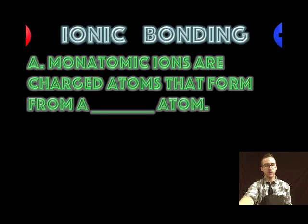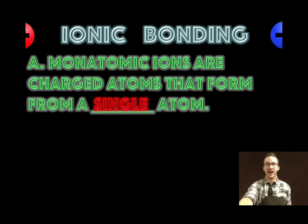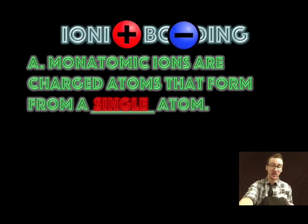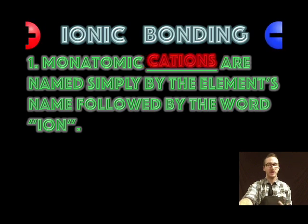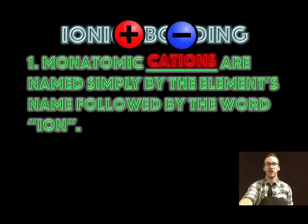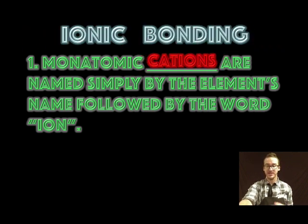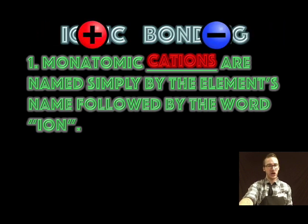Okay, so first let's recognize that you can have monatomic ions which are charged atoms that form from a single atom. Monatomic cations or those positive ions are named simply by the element's name followed by the word ion.